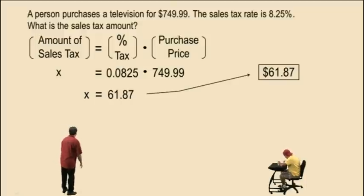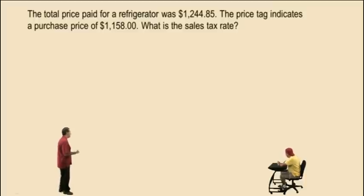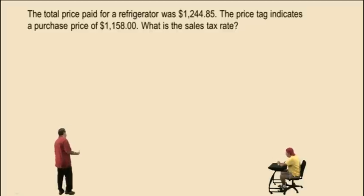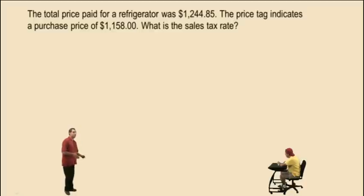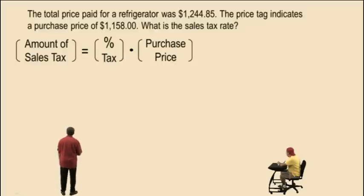Here's another problem. The total price paid for a refrigerator was $1,244.85 — that's the price paid at the cash register, and it includes the amount of sales tax. The price tag indicates a purchase price of $1,158.00 — that's the price on the price tag. What is the sales tax rate?